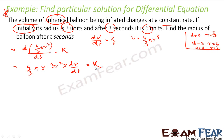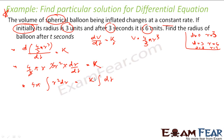The 3s cancel, and since 4π is a constant, we can write: the integral of r² dR equals k times the integral of dt. This is a first-order, first-degree differential equation.